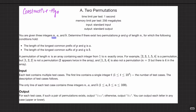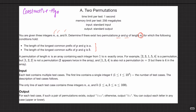You are given three integers n, a, and b — all positive. Determine if there exist two permutations p and q of length n for which the following conditions hold. A permutation is just an array which contains all elements from 1 to n exactly once in any order. We have to determine if two such permutations p and q exist.